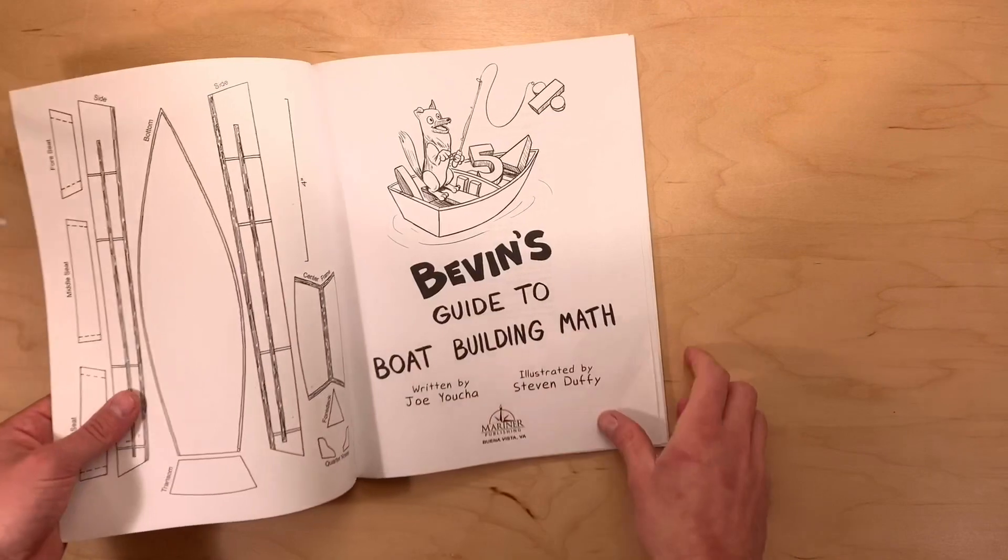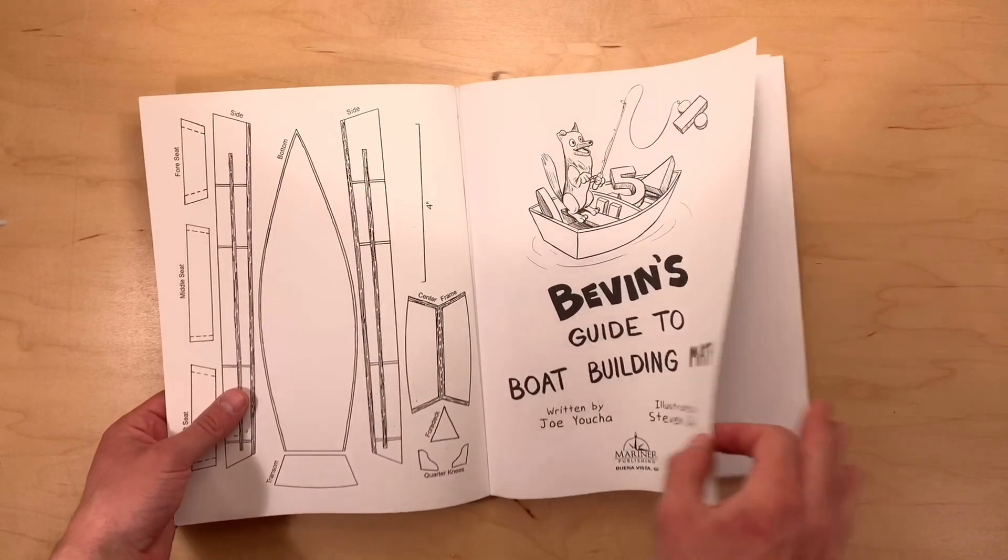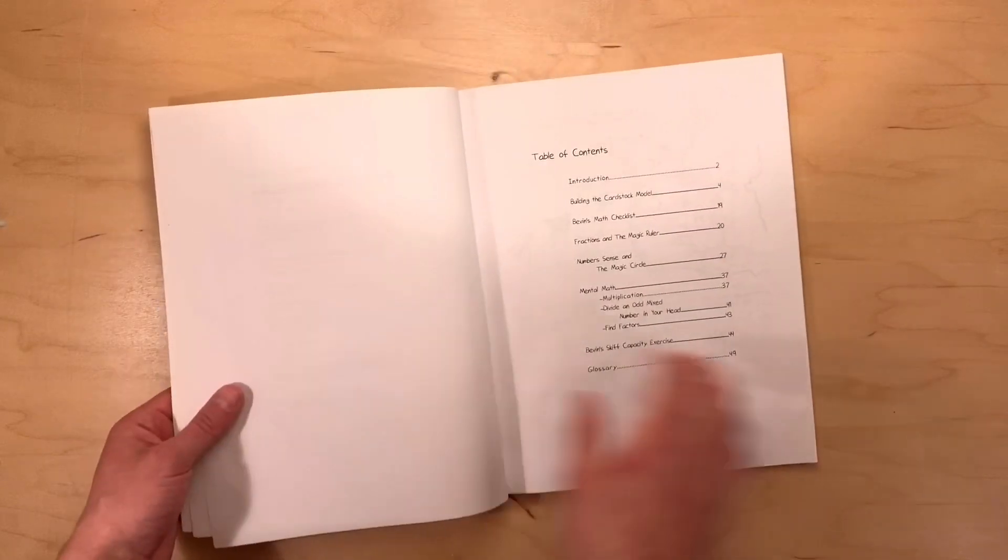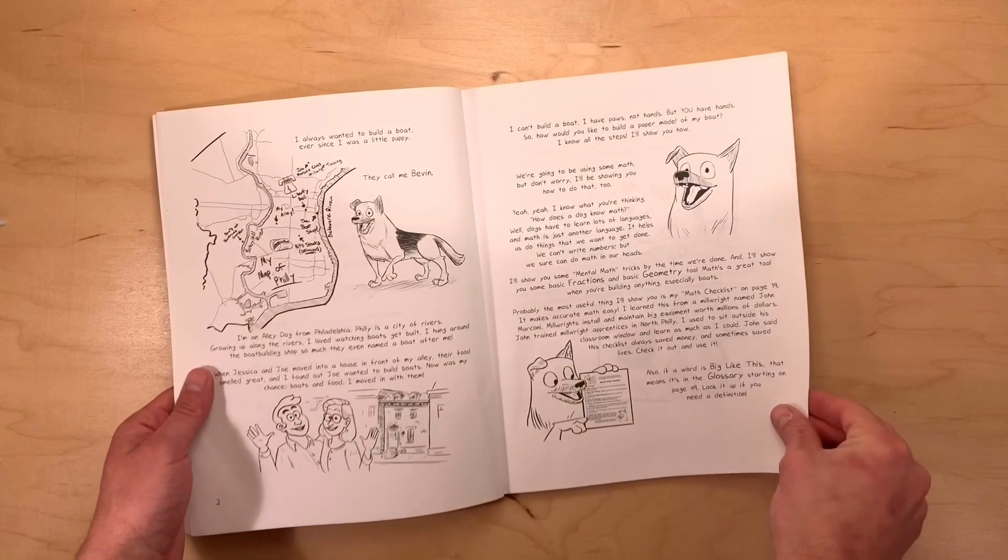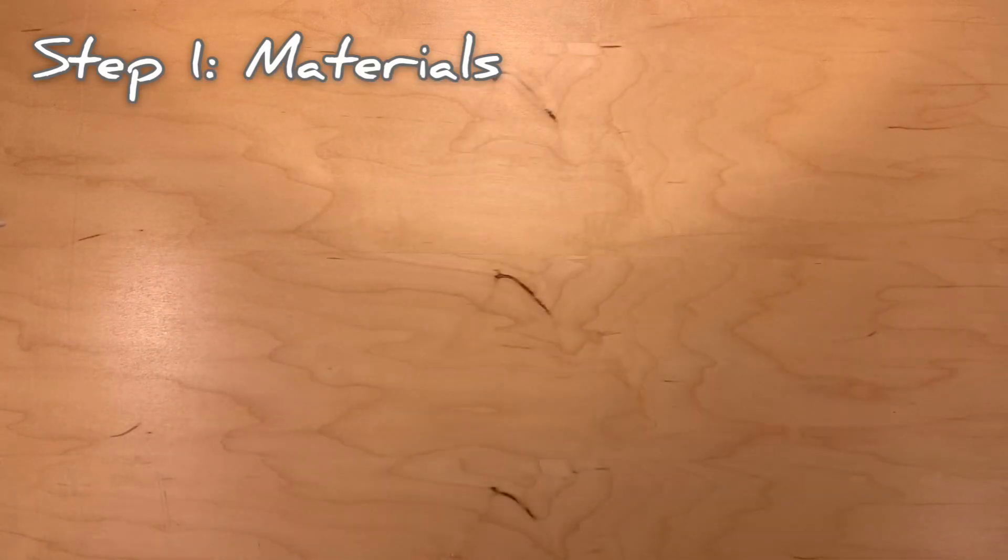We'll be using Joe's book to learn a little bit about the concepts of boat building, boat terminology, and even a little bit of boat building math as we build the cardstock model today. Just like in real boat building, the first step is to gather our materials. Let's get started.